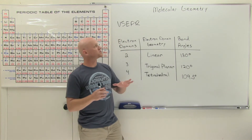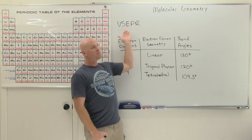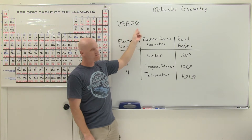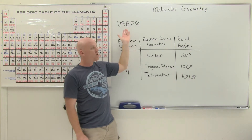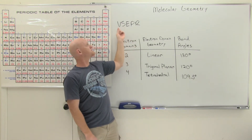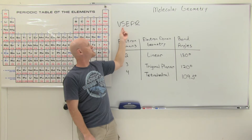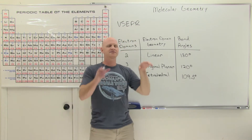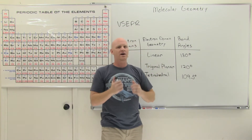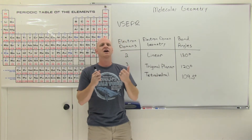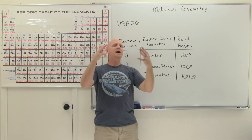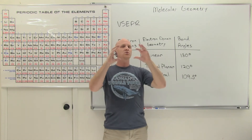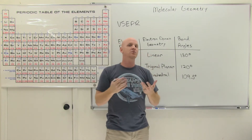Before we get into the actual shapes, we need to talk about VSEPR theory — it stands for valence shell electron pair repulsion. What this really means is that when you look at the electron groups around an atom, electrons being negatively charged all repel each other and want to spread out as far apart as possible, minimizing their repulsions.